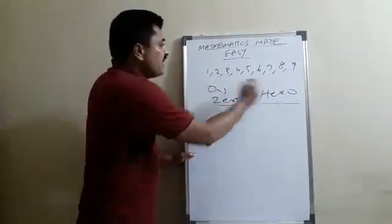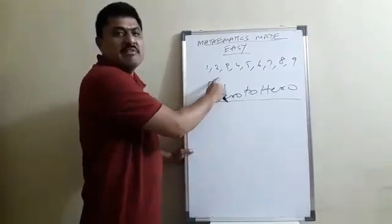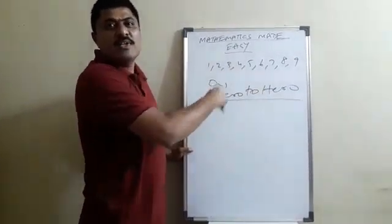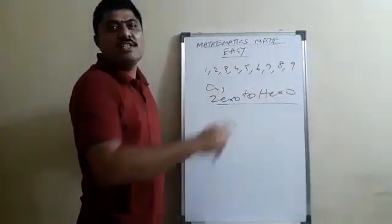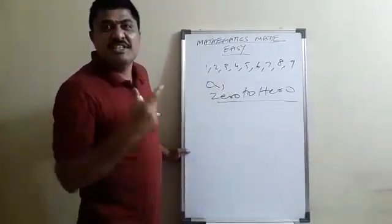Now, when we, now all these numbers from 1 to 9 are fighting with each other. 1 is fighting with 2, that I am greater than you. Next number, I am greater than you. 9 is saying, that I am greater than all these 1 to 8 numbers.